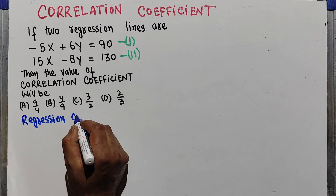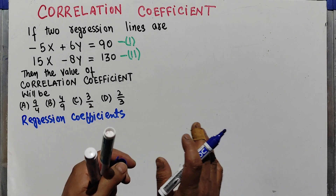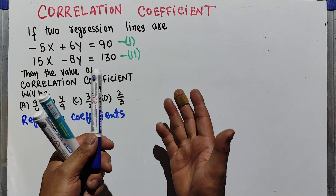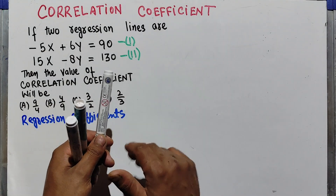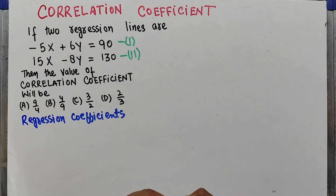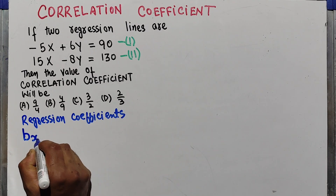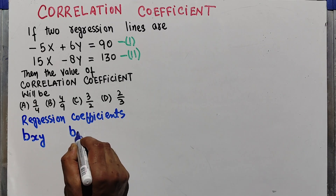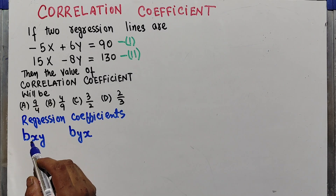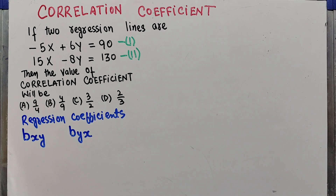The regression coefficient is a statistical measure used to measure the functional relationship between dependent and independent variables. We need to find B_XY and B_YX. B_XY is the regression coefficient of X on Y, and B_YX is the regression coefficient of Y on X.